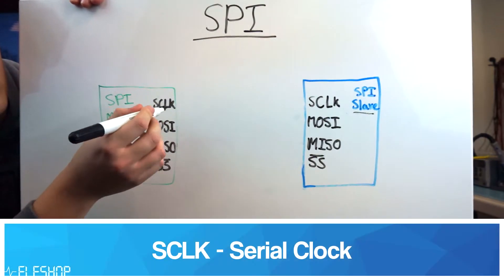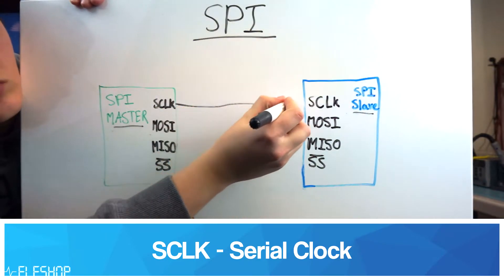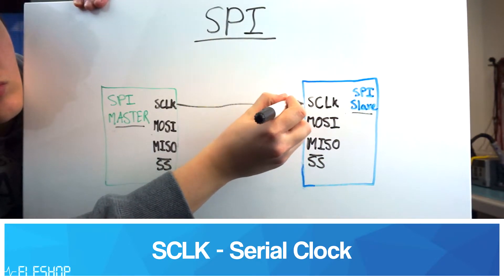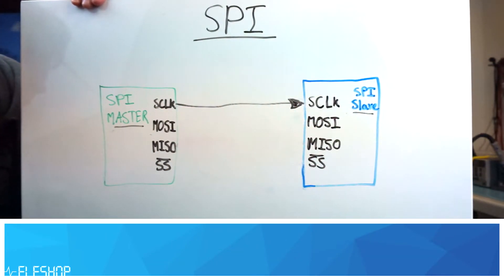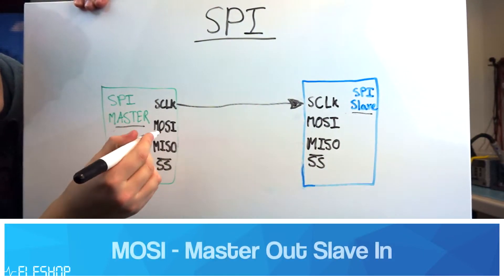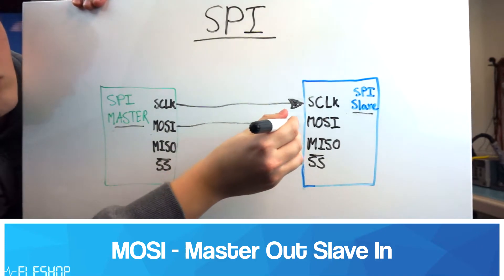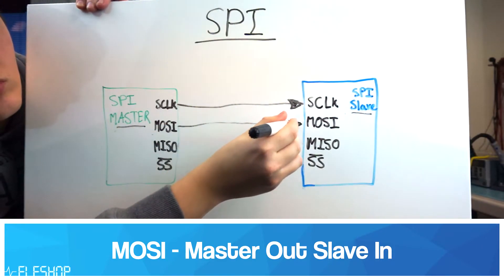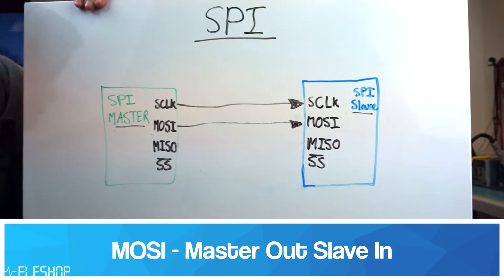First, SCLK is the serial clock, which means that it is a synchronous interface. An asynchronous interface means that there is no clock. Furthermore, we have MOSI which stands for master out slave in and means that there is a data line from master to slave.